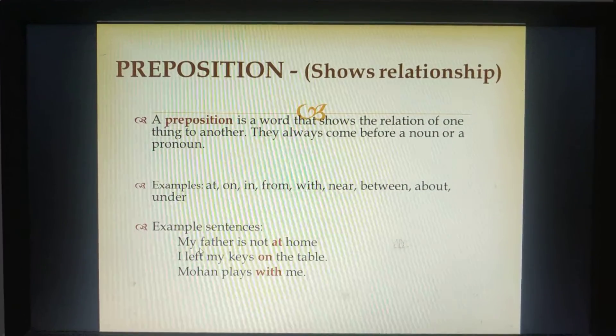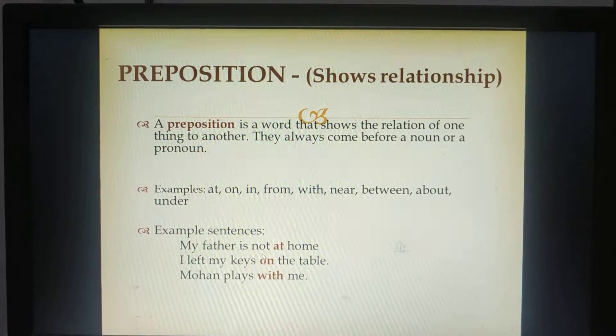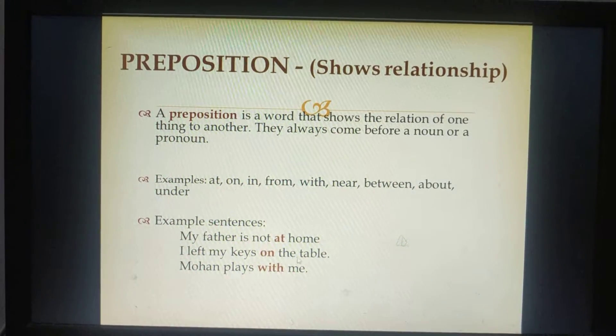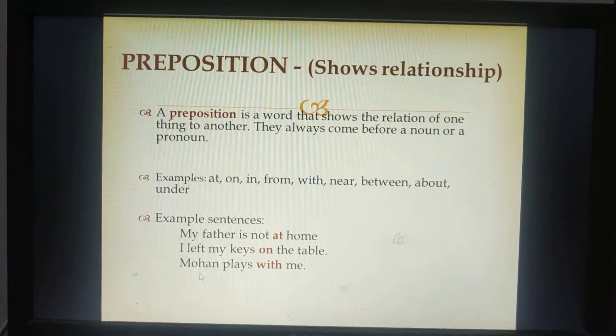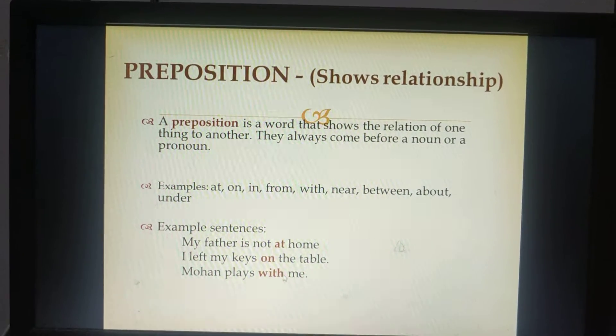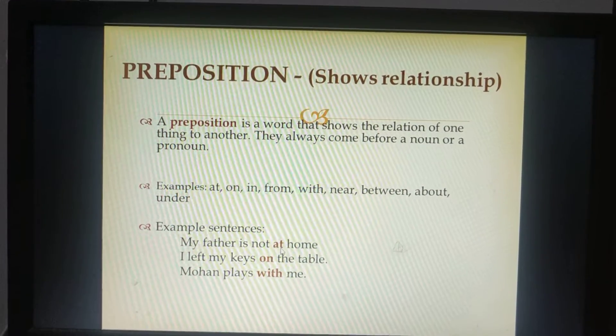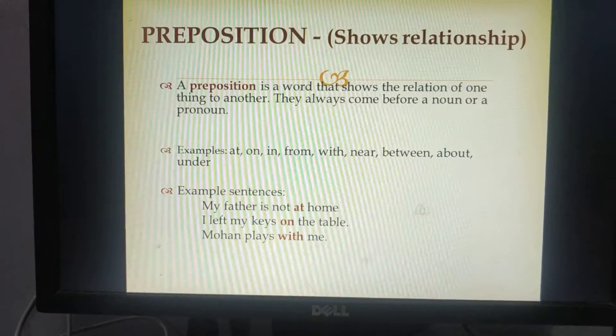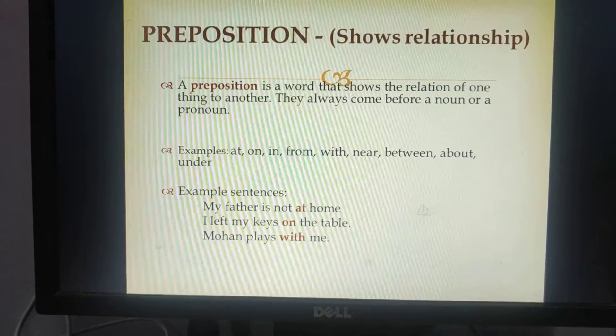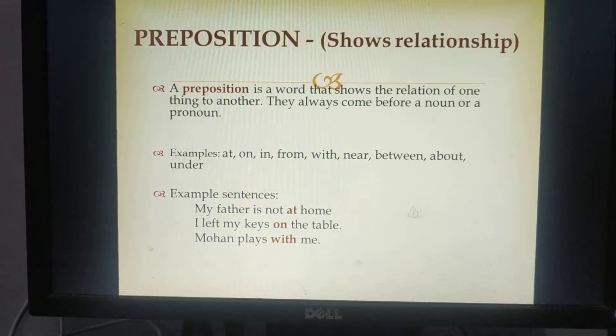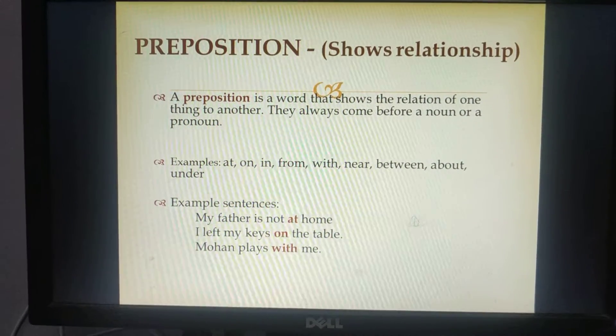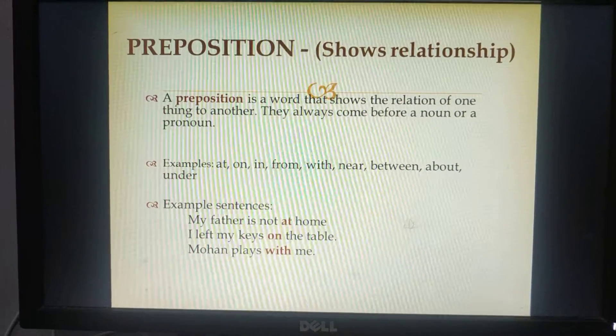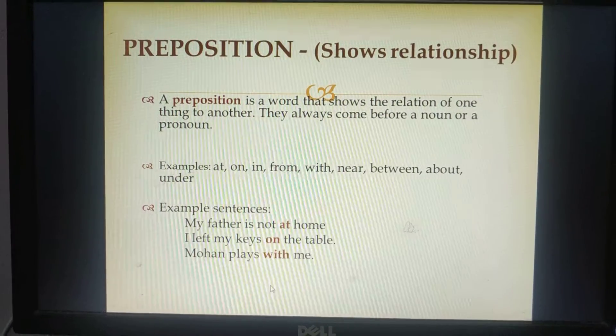Let's see how these words are used in the sentence. For example, my father is not at home. I left my keys on the table. Mohan plays with me. The words at, on, with show the relation of one thing to another. Such words are called prepositions. Preposition tells us the position of something. They always come before a noun or a pronoun.